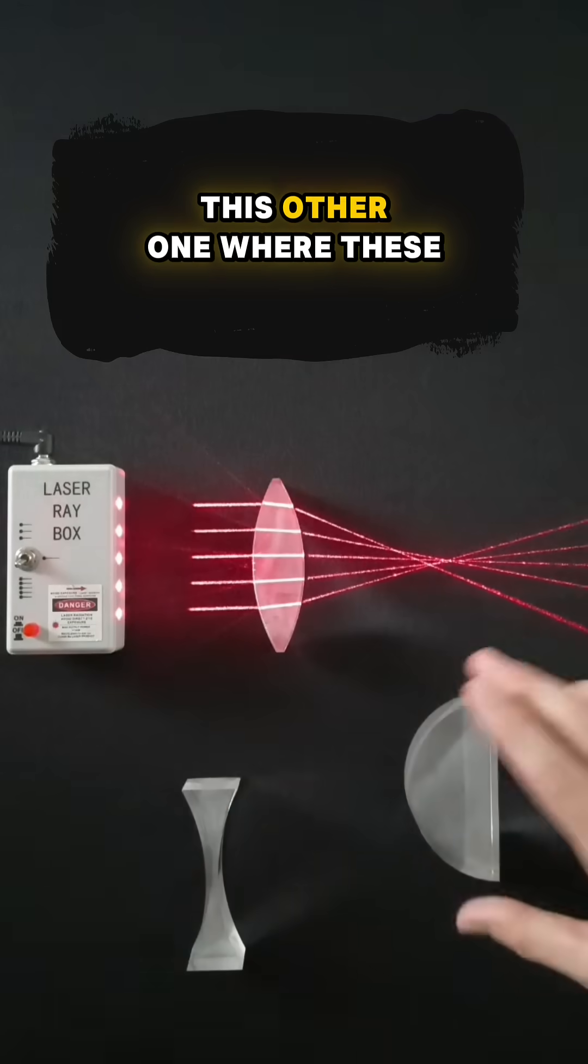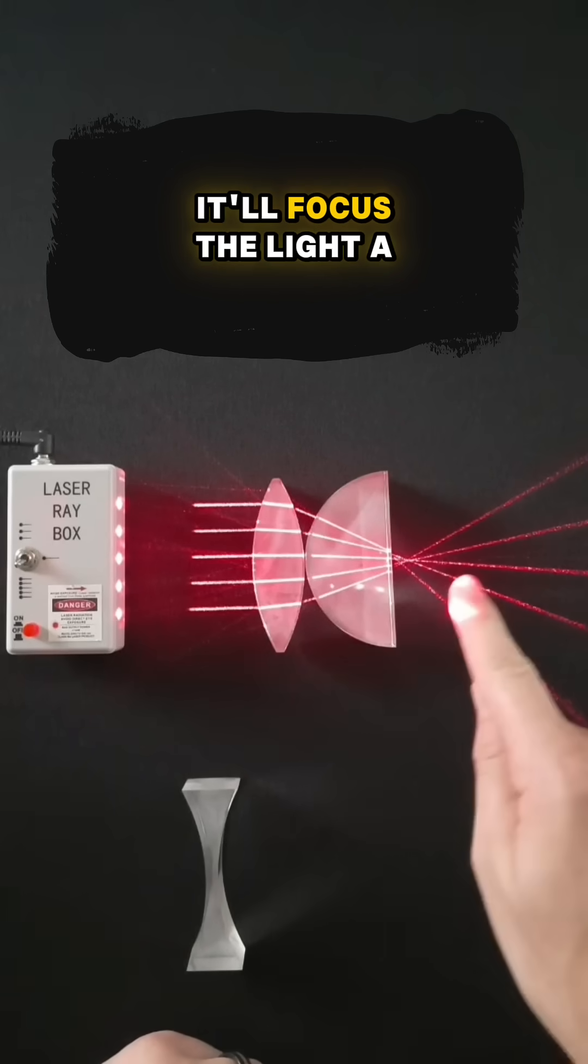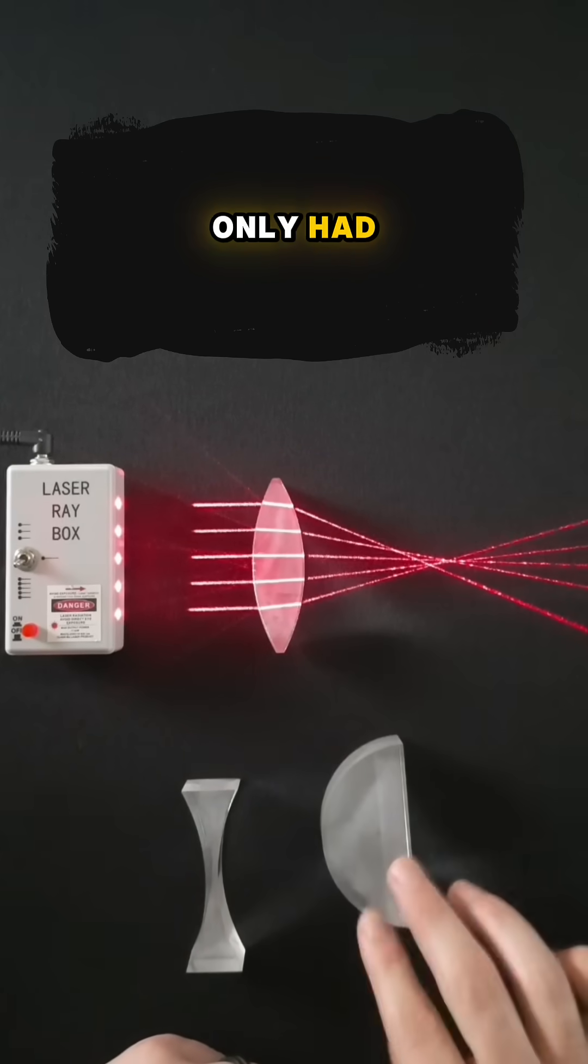Now I can add in this other one, where these are both focusing lenses. So if you have both of them in here, it'll focus the light a little sooner than if you only had one of these lenses.